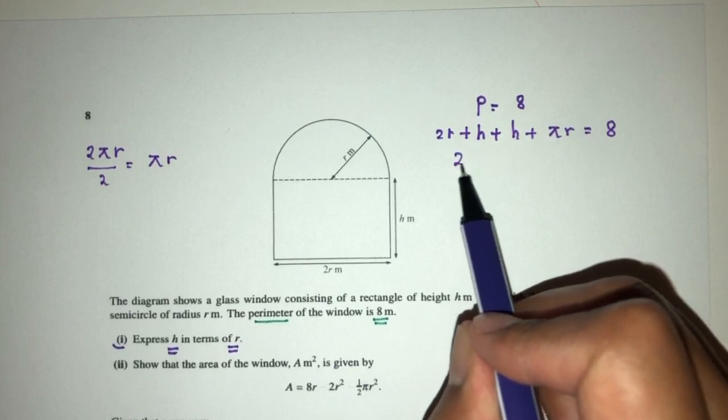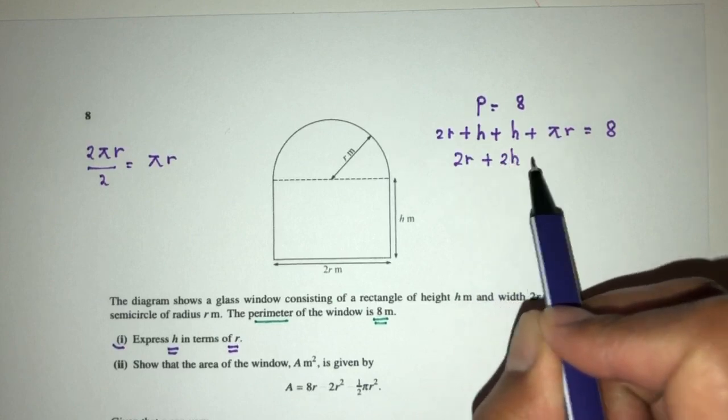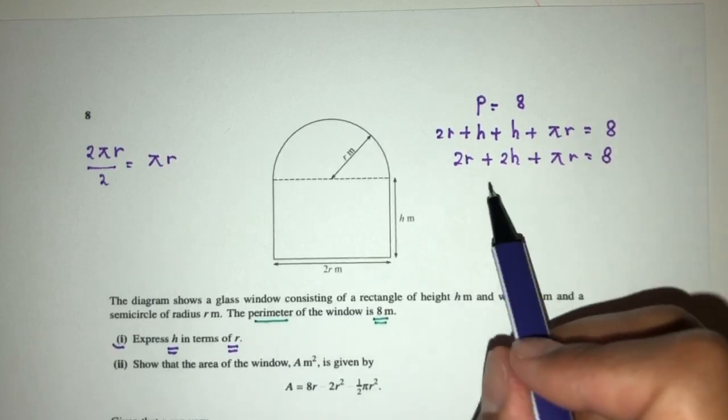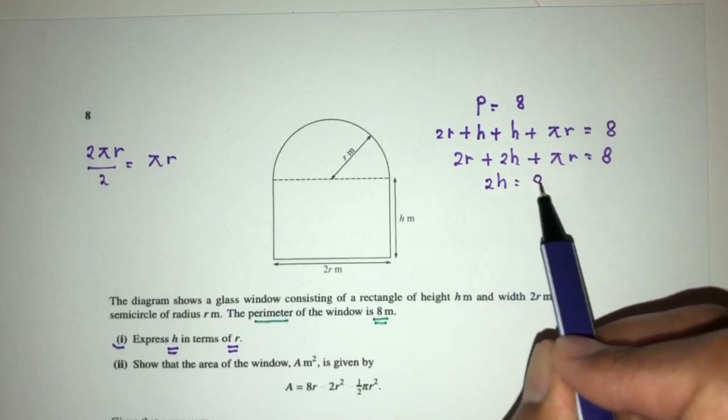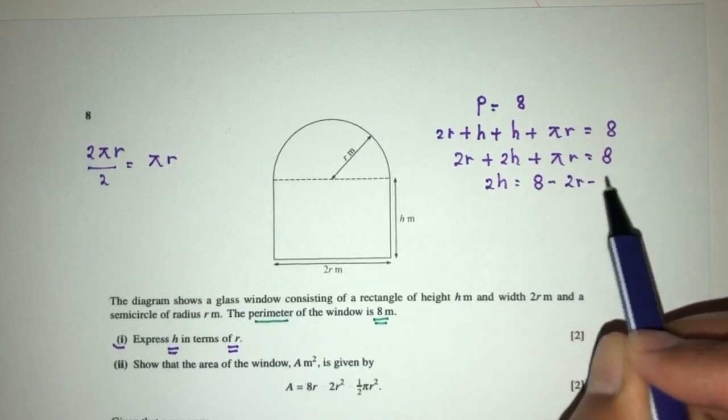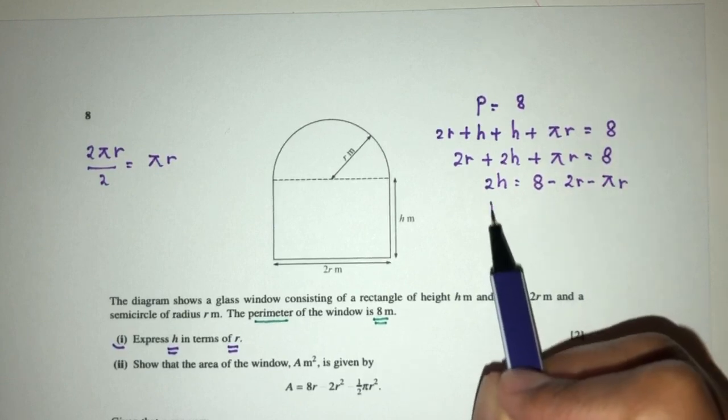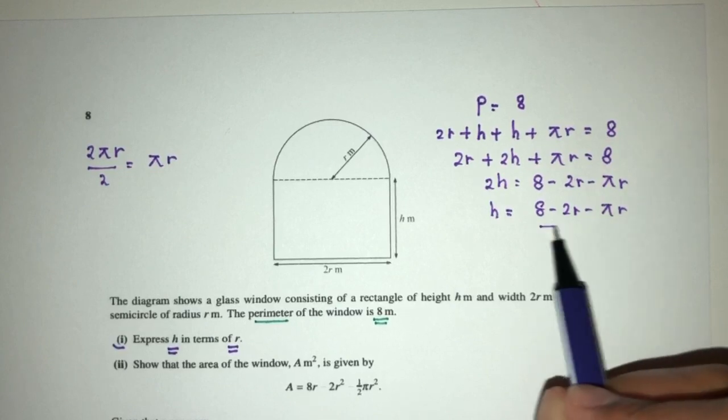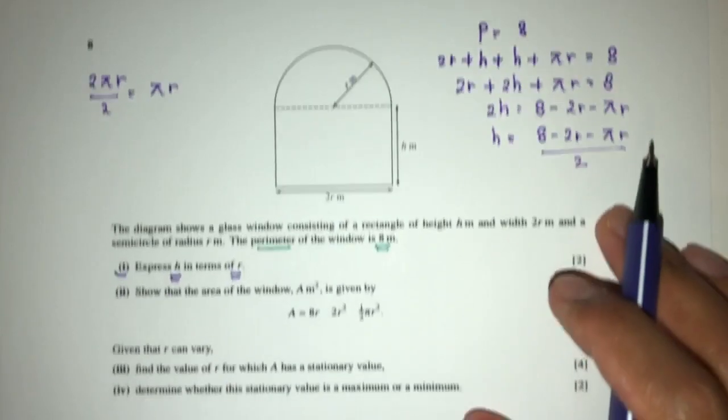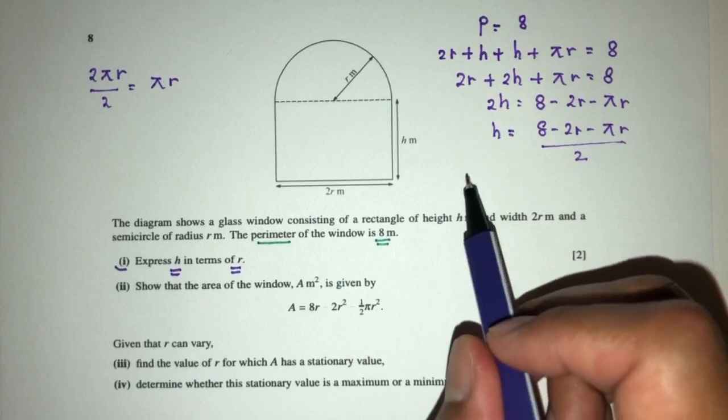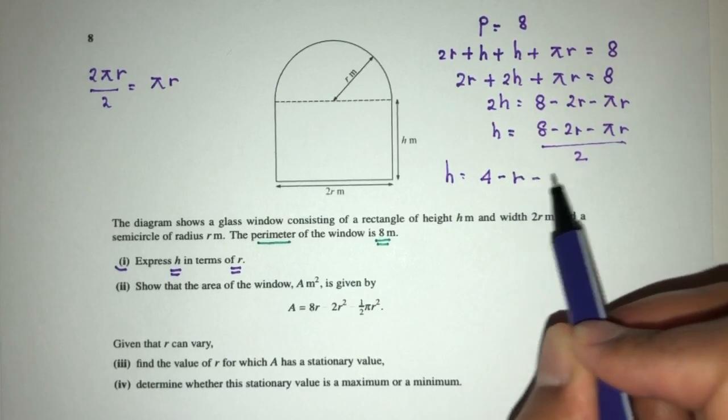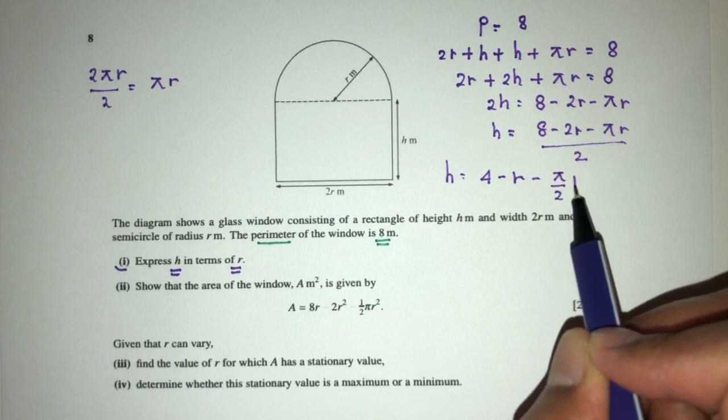Simplify, you will have 2r plus 2h plus πr is equal to 8. Now, h, so you have 2h, that will be 8 minus 2r minus πr. h will be 8 minus 2r minus πr divided by 2. Or you can simplify as well. h will be 4 minus r minus π over 2r.